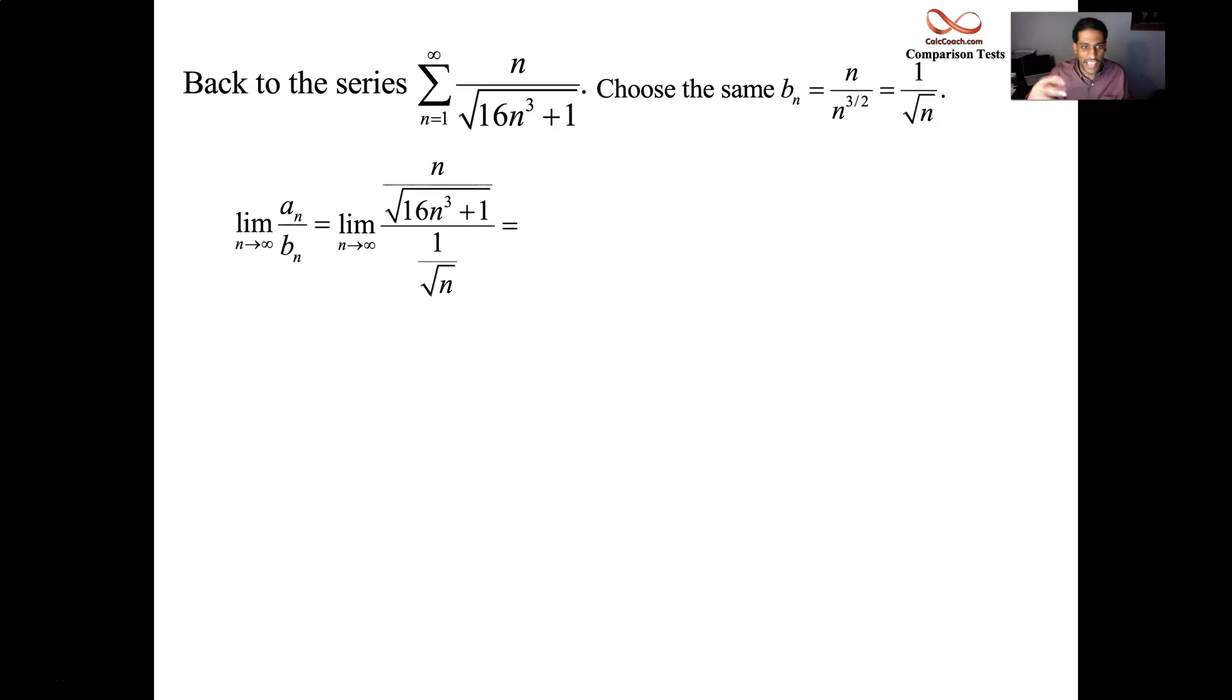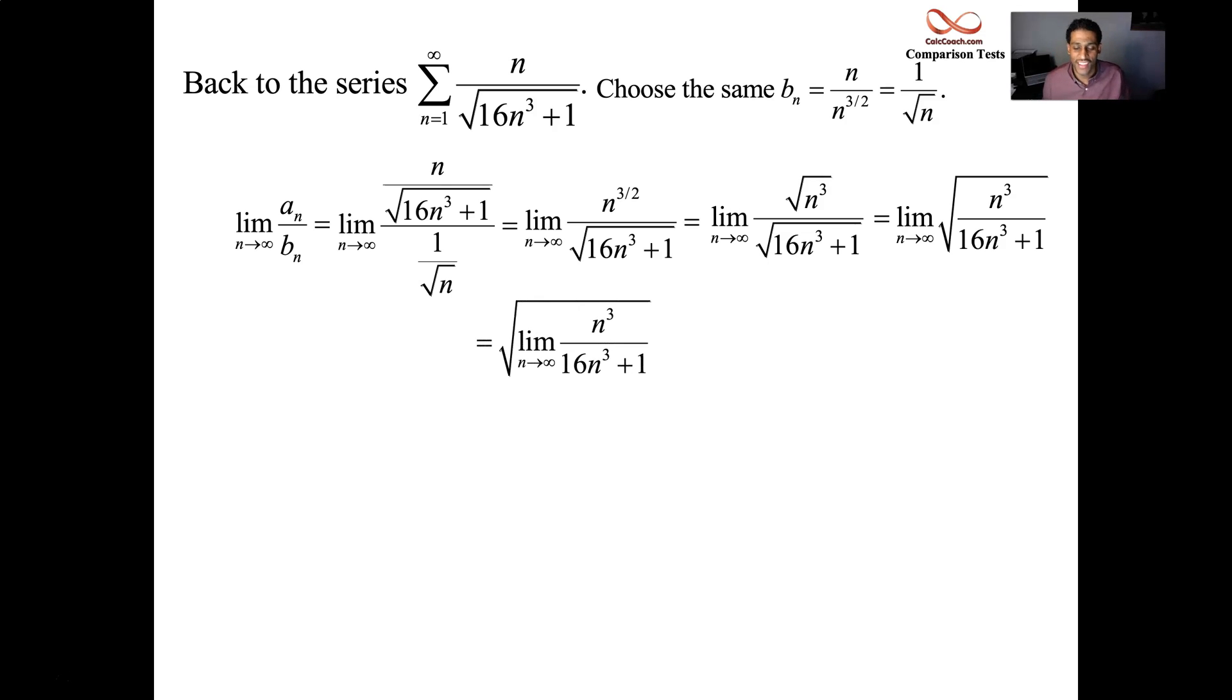We'll divide these two. So when you divide this, you're going to multiply by the reciprocal. I'm going to have this limit here: n to the three halves on top of 16 n cubed plus one underneath the square root. Limit as n goes to infinity. What you're going to do is rewrite the n to the three halves as n cubed underneath the square root. So this whole thing is underneath the square root. And you can bring the limit on the inside if it exists.